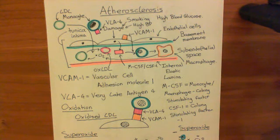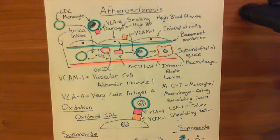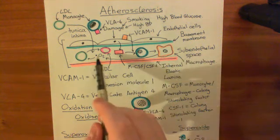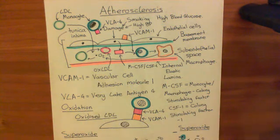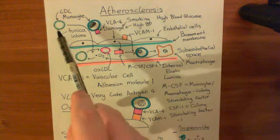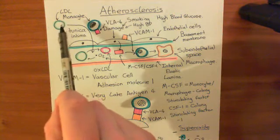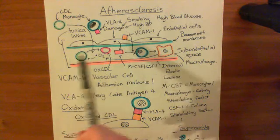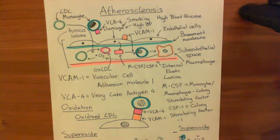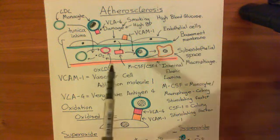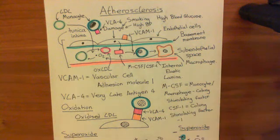The macrophage is there on the understanding that there is some horrible pathogen that needs killing. So it starts producing superoxide — a molecule that really wants to gain an extra electron. When the endothelium gets damaged, by mechanisms that aren't fully understood, low-density lipoproteins are allowed to move across the endothelium and accumulate in the subendothelial space. So now you've got this superoxide that the macrophages are producing meeting this low-density lipoprotein that has accumulated in the subendothelial space.